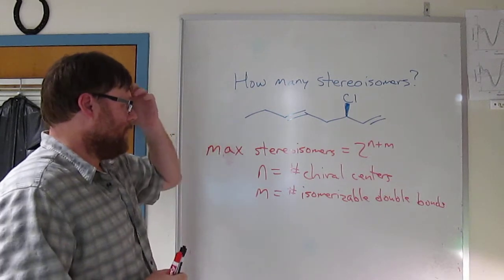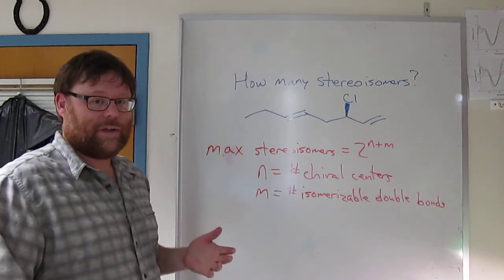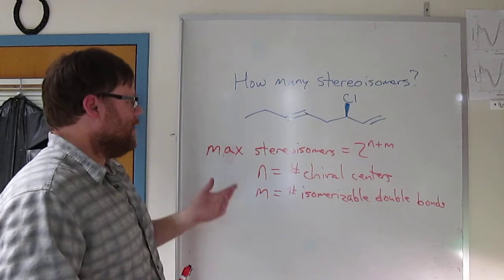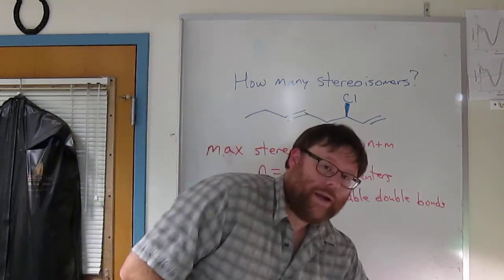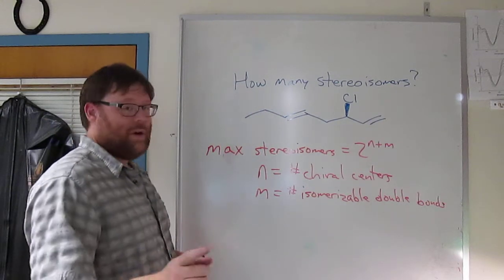So you've got two double bonds. We have to determine, the question you're probably asking yourself is, what's an isomerizable double bond? I'll answer that. And then you have to identify the number of chiral centers. So let's do that. I'm going to put a green star next to the carbons that are chiral.